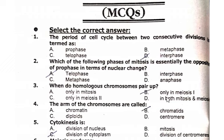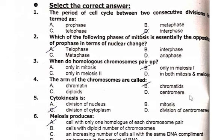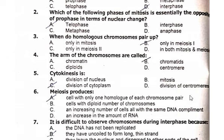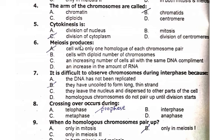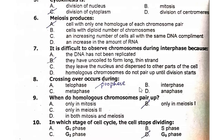When do homologous chromosomes pair up? It is only in meiosis I. The arms of chromosomes are called chromatids. Cytokinesis is the division of cytoplasm. Meiosis produces a cell with only one homolog of each chromosome pair. It is difficult to observe chromosomes during interphase because they have uncoiled to form long thin strands.